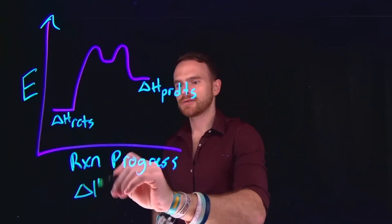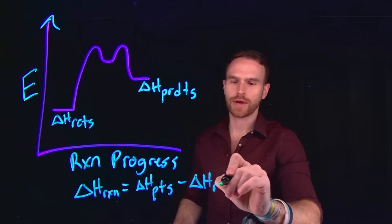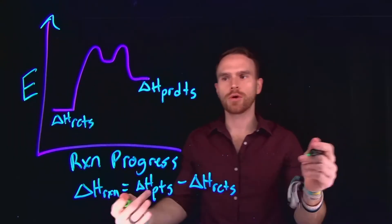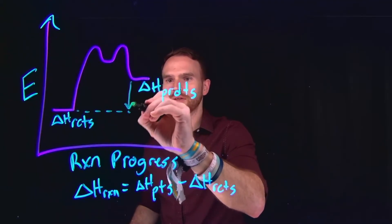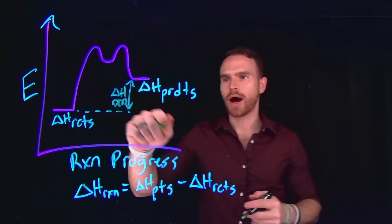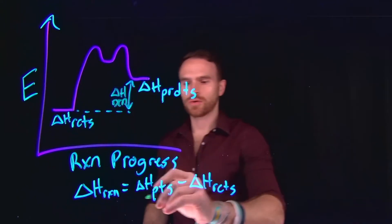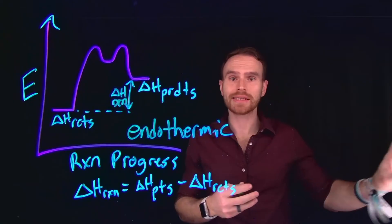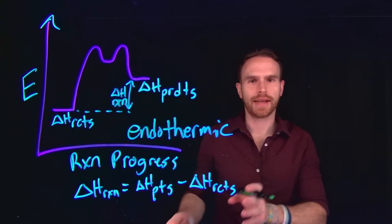Hess's law states that delta H of the reaction equals delta H of the products minus delta H of the reactants. This is a state function, so even though it proceeds via a mechanism with varying energy levels, we only care about products minus reactants to determine overall enthalpy. Since the products are higher in energy than the reactants, this is going to be an endothermic process — meaning I have to put in energy for this reaction to occur. If the energy of the products were lower than the reactants, that would be exothermic.